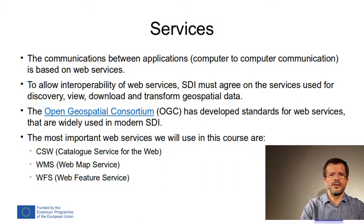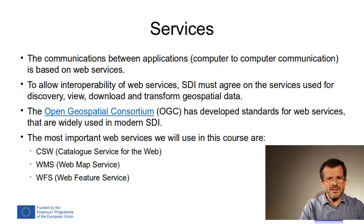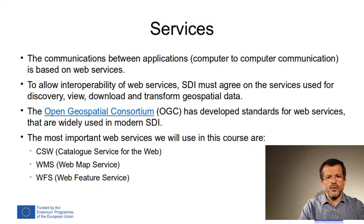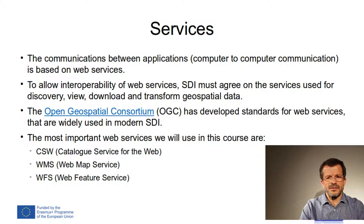The communication between applications — computer-to-computer communication — is based on web services. To allow interoperability of web services, SDI must agree on the services used for discovery, view, download and transform geospatial data. The Open Geospatial Consortium (OGC) has developed standards for web services that are widely used in modern SDIs. The most important web services we will use in this course are Catalog Services for the Web, Web Map Service, and Web Feature Service. Later in this course we will study these services in more detail.